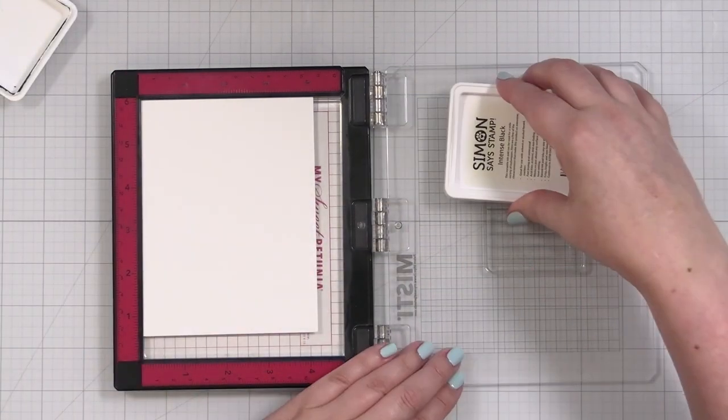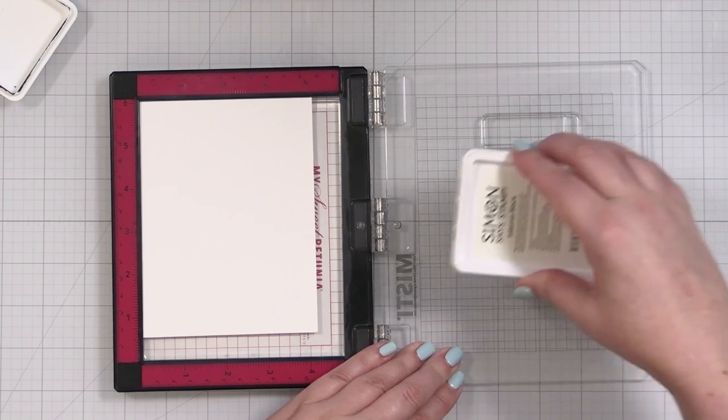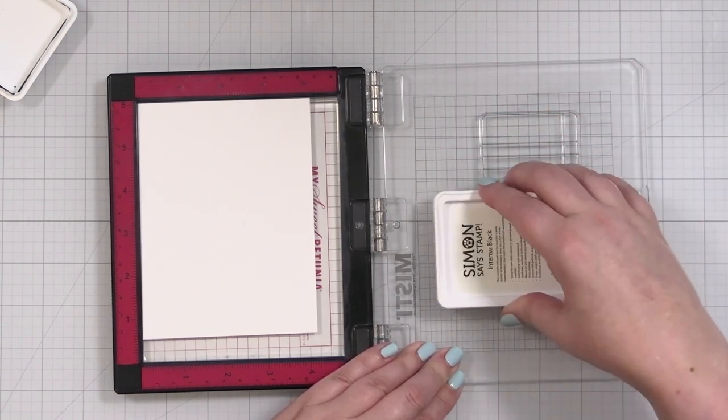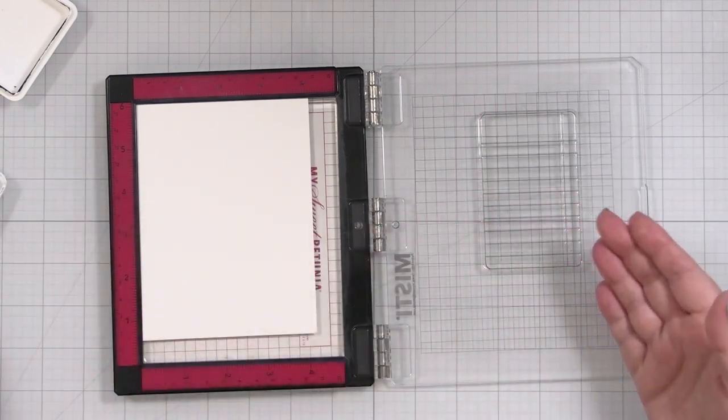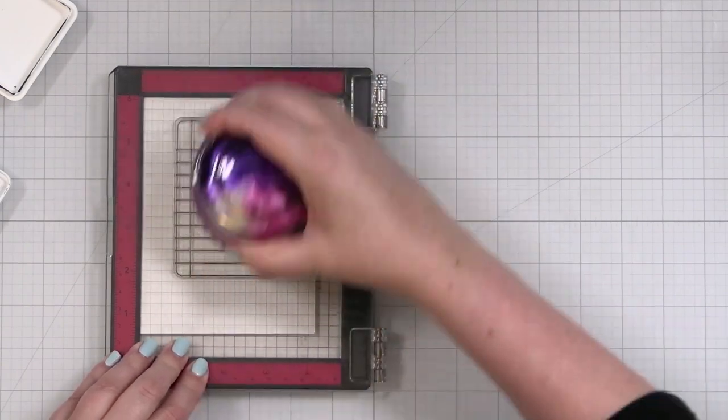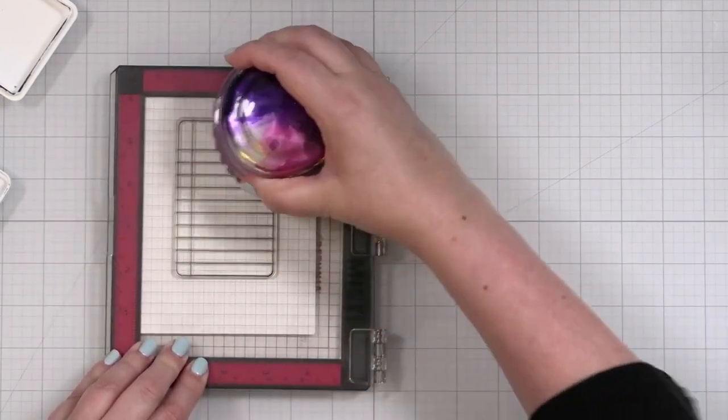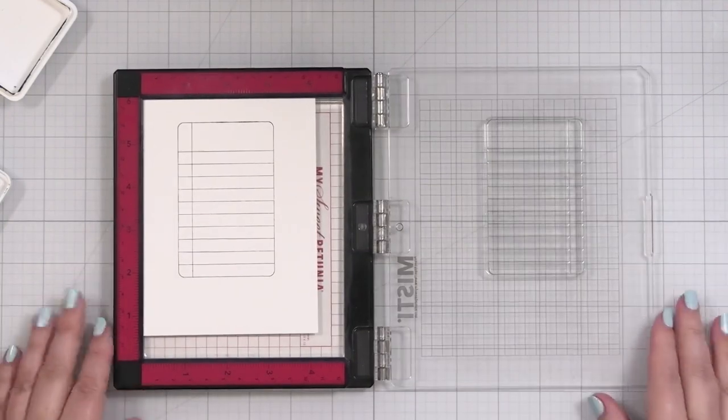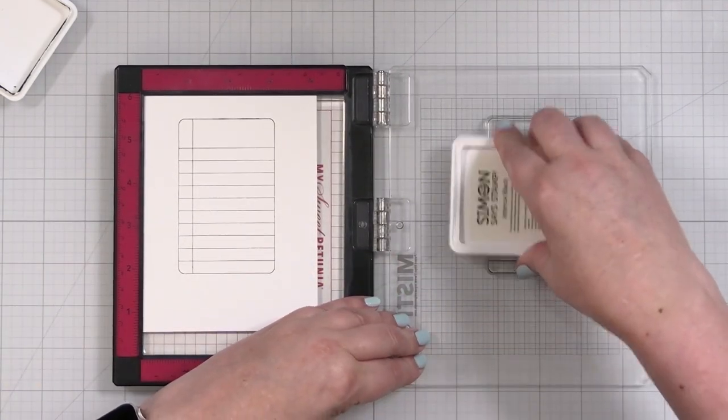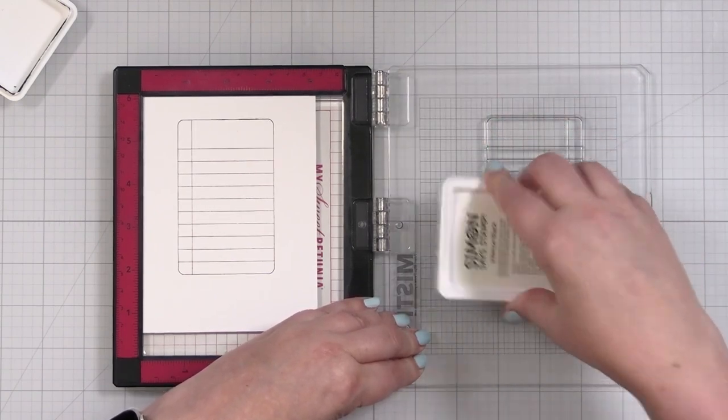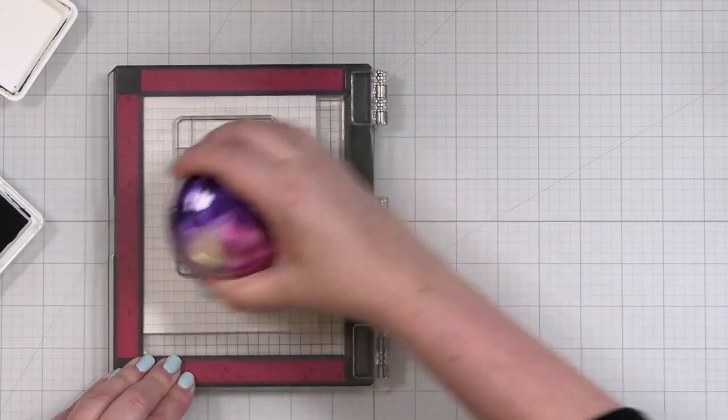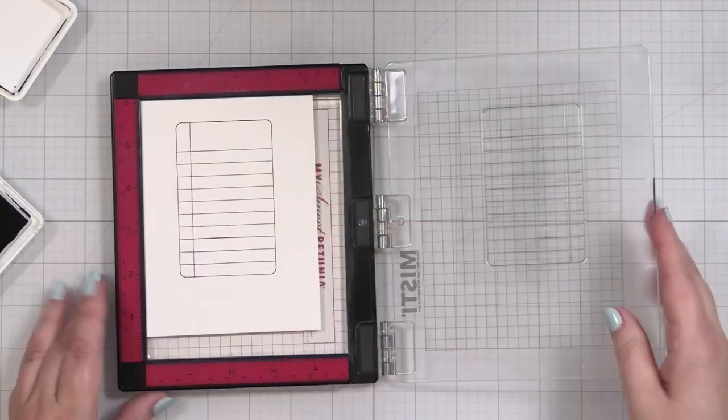Any black ink will do. This is just a nice inky black. So we'll ink up our list, bring it down, and transfer. And there we have our list. Now you could do this in any color you like. I'm going to keep it pretty simple here and just keep it in the black.